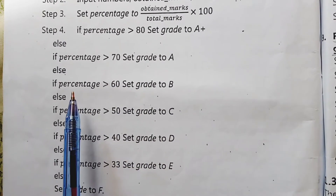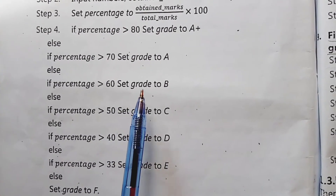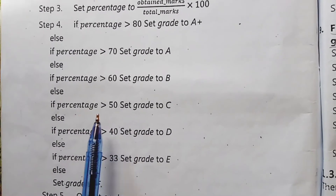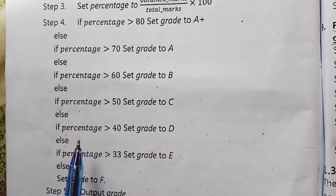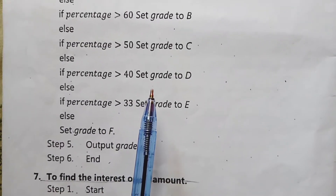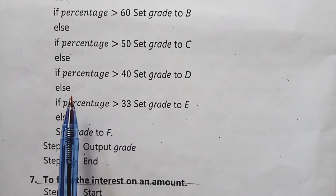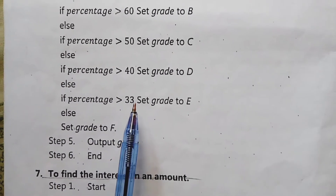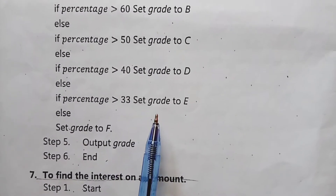If the condition for greater than 70 is false, another condition checks if percentage is greater than 60 — if true, grade B is printed. If false, it checks if percentage is greater than 50 — if true, grade C is printed. If false, it checks if percentage is greater than 40 — if true, grade D is printed. Then if percentage is greater than 33, grade E is printed.